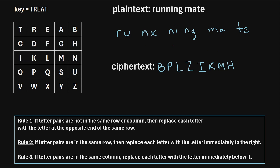Next is the pair M, A. We find M and A and can see they are in the same column, so we use rule three: if the letter pairs are in the same column, replace each letter with the letter immediately below it. M is replaced with S, and A is replaced with G. Note: if a letter is at the bottom of the column, you wrap around to the top — for example, Y would be replaced with A.